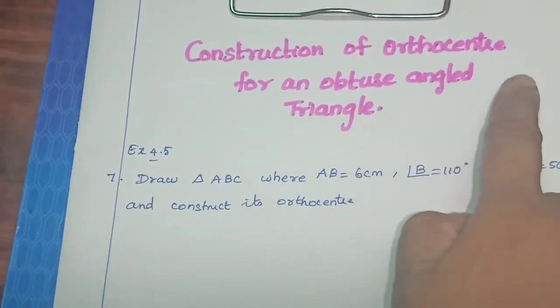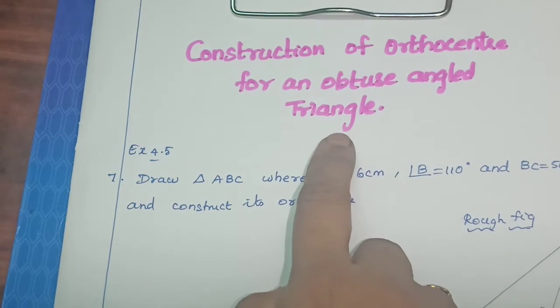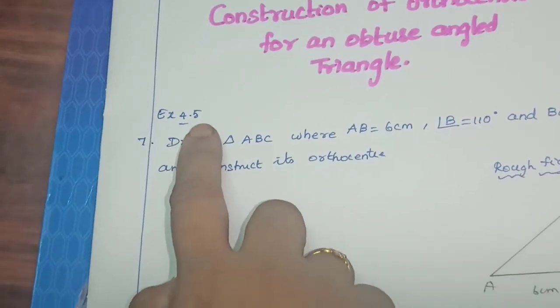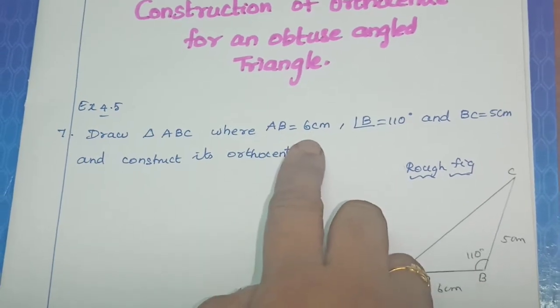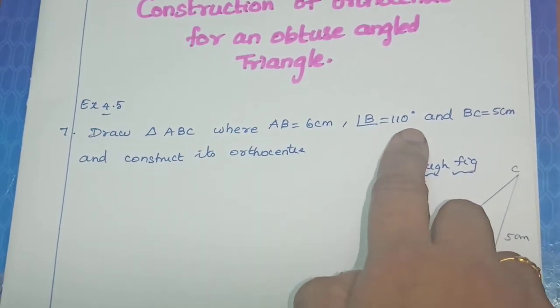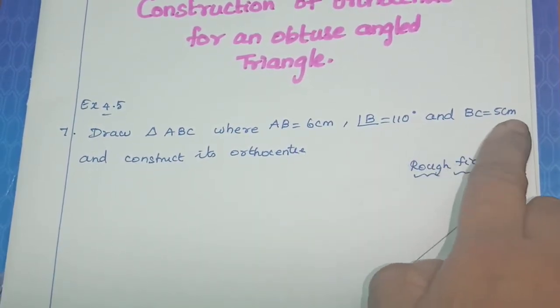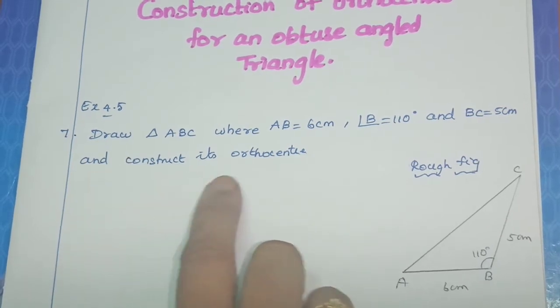Now, we are going to see construction of orthocenter for an obtuse angle triangle. Exercise 4.5, problem 7 says: Draw triangle ABC where AB is equal to 6 cm, angle B is equal to 110 degrees, and BC is equal to 5 cm, and construct its orthocenter.